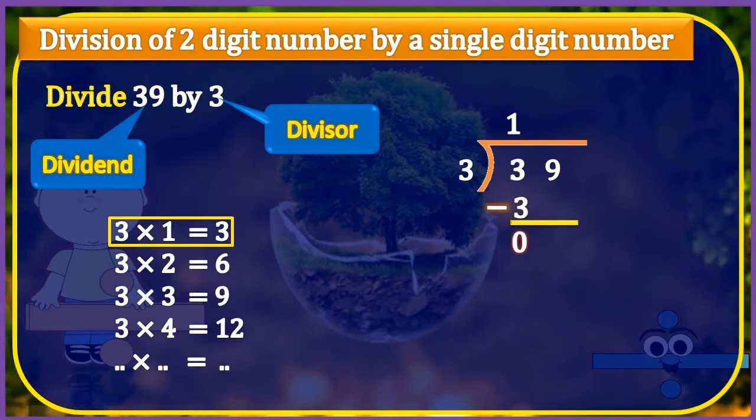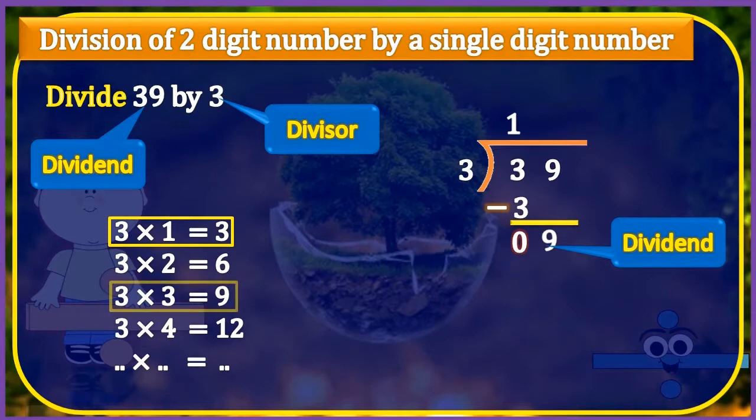But we still have 9 to divide. So we write 9 at unit place, that is after the number 0. Now we have a new dividend, that is 9. For dividing the number 9 by 3, count the table of 3. We found that at third time, the table is showing the number 9, that is equal to the dividend number. So write the quotient 3 at unit place and number 9 below this. After subtracting, we have nothing to divide. That is, we have 0 as a remainder.